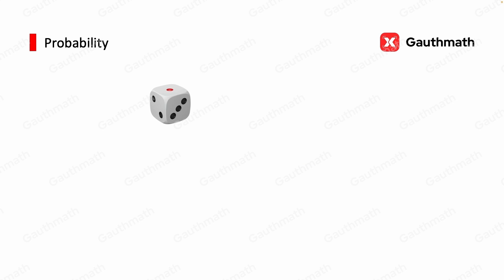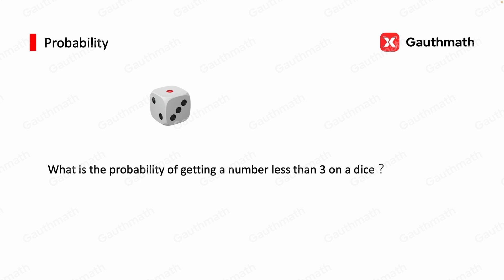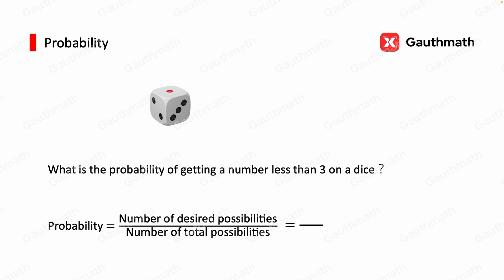Let's apply that concept to another common item in probability: the dice. We now have a six-sided dice. Suppose we want to know what is the probability of getting a number less than 3 on this dice. Remember, the probability is equal to the number of desired outcomes over the number of total outcomes.